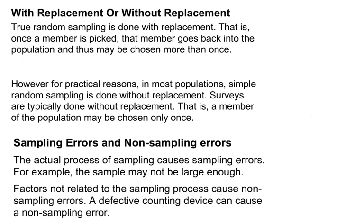We also want to talk about sampling errors and non-sampling errors. A sampling error is anything related to the sample itself — the technique used, or whether the sample wasn't large enough. A non-sampling error might be associated with the methodology or a technical error, such as using a device that malfunctioned.